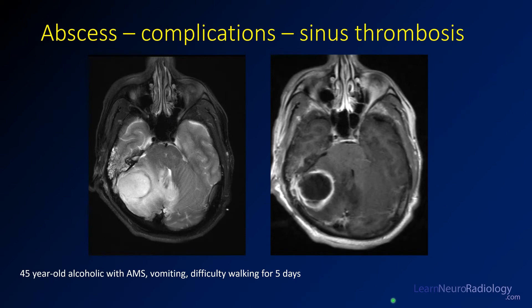This patient had the complication of sinus thrombosis. Anytime you have mastoiditis or intracranial extension of infection, you want to look at those sinuses. The sinus is T1 bright and incompletely enhancing, confirming sinus thrombosis. The arrows demarcate that thrombosis.